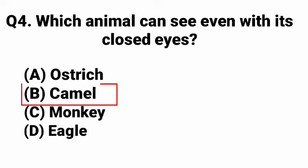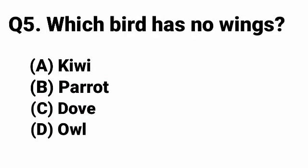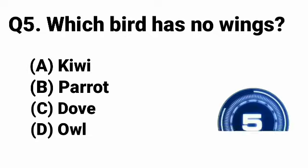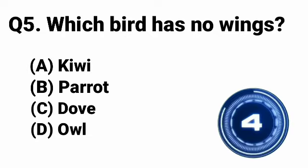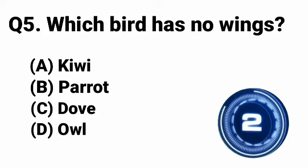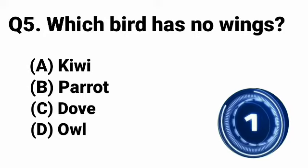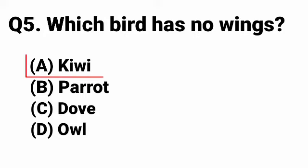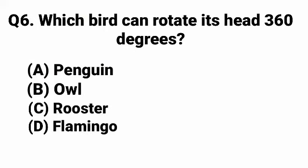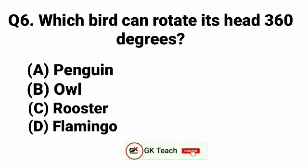Question 4: Which animal can see even with its closed eyes? Answer: Option B - Camel. Question 5: Which bird has no wings? Answer: Option A - Kiwi.